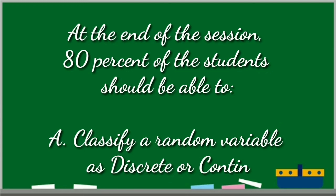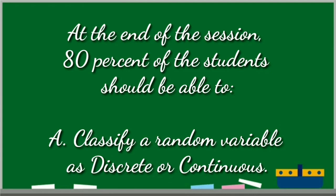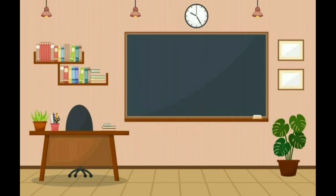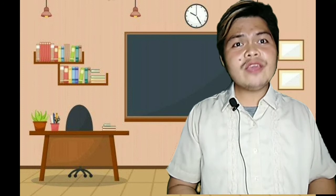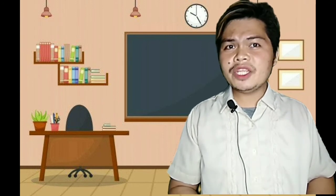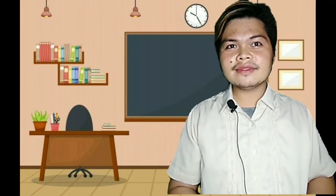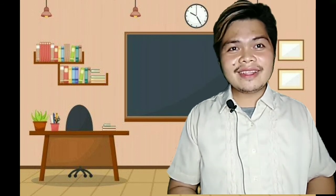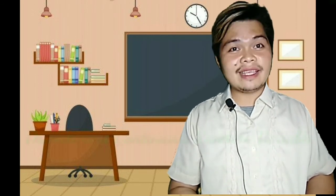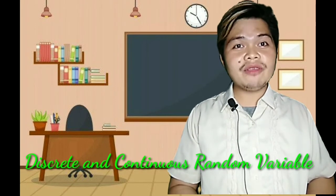At the end of the session, 80% of the students should be able to classify a random variable as discrete or continuous. From the activities to our objective. Can you guess what is our topic in this video? Exactly. It's all about discrete and continuous random variable.